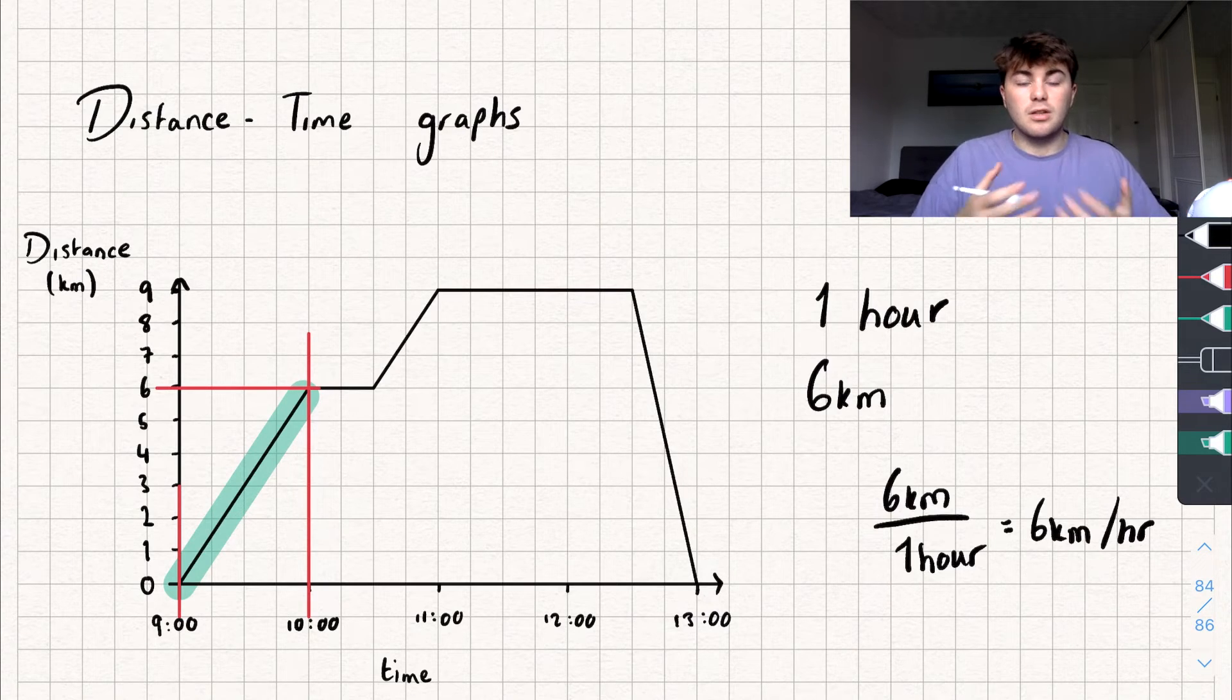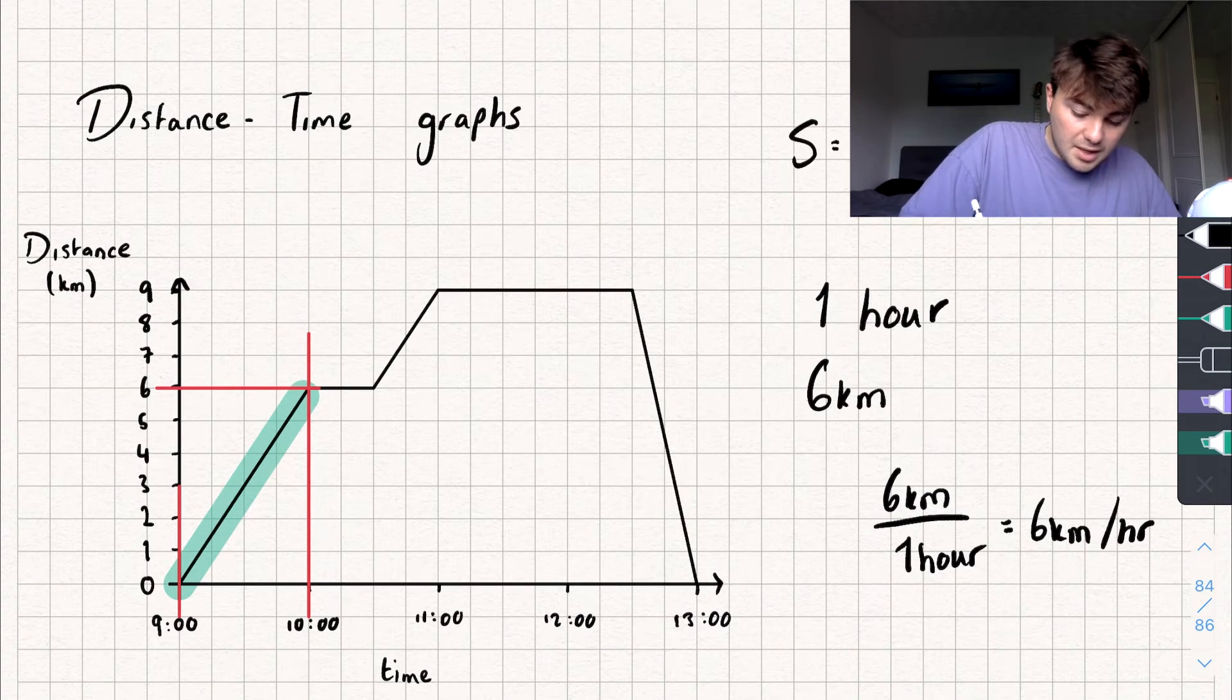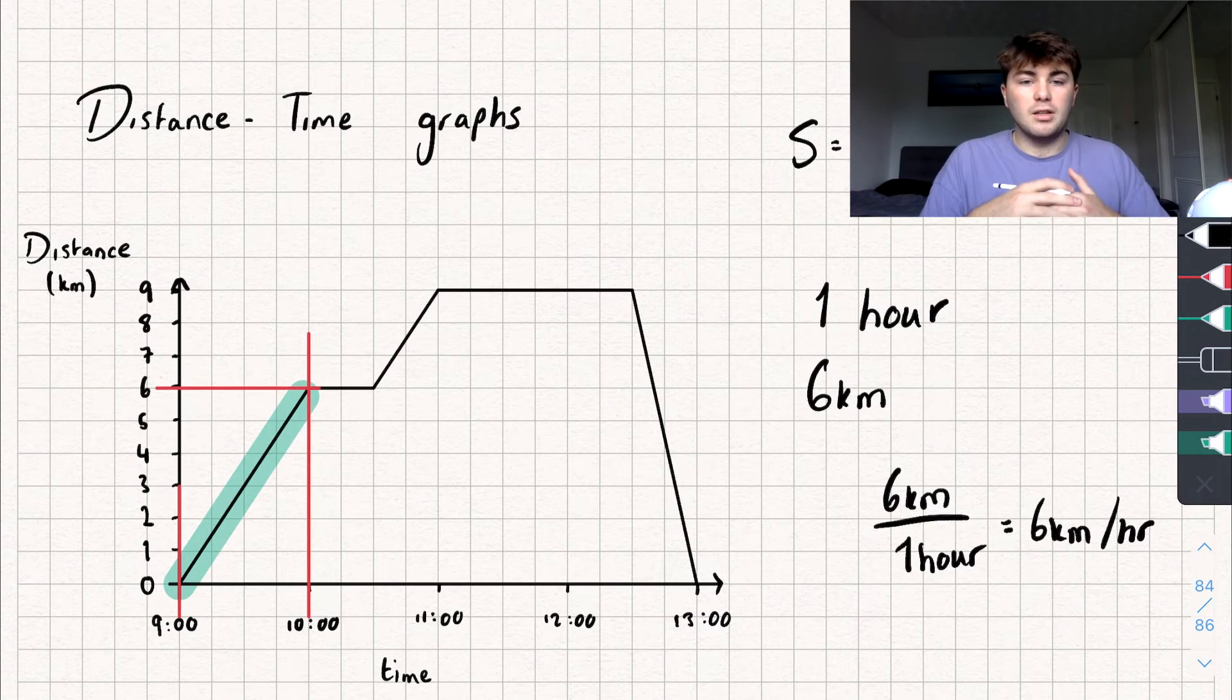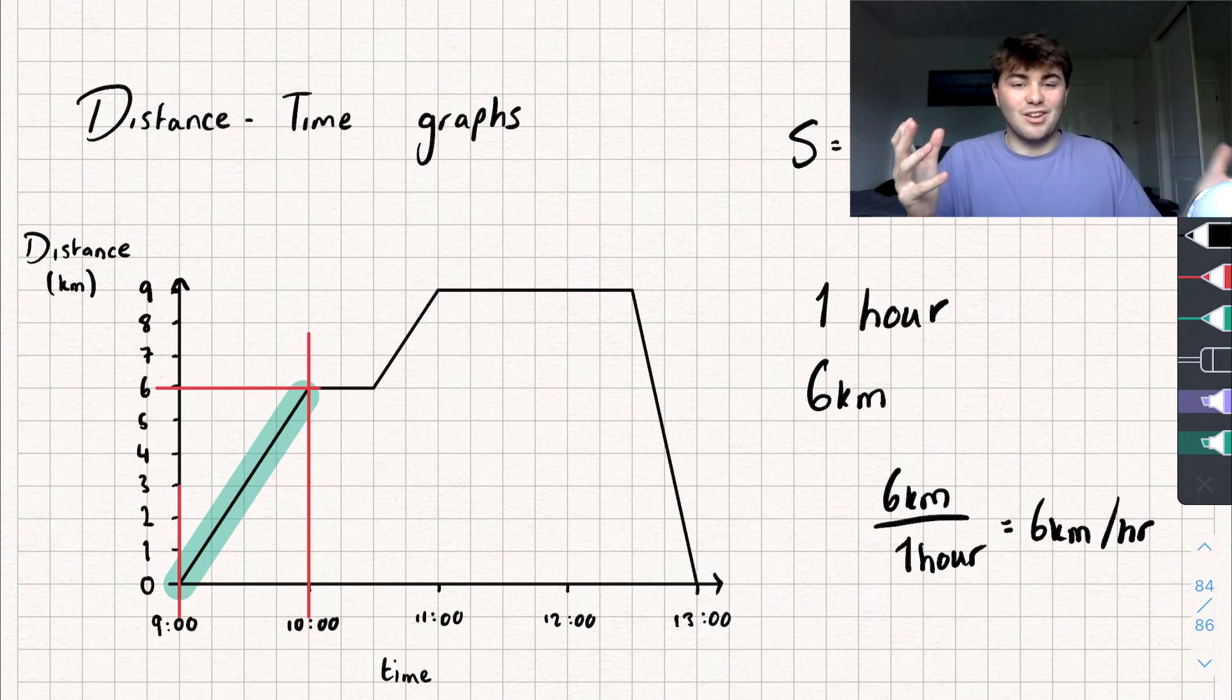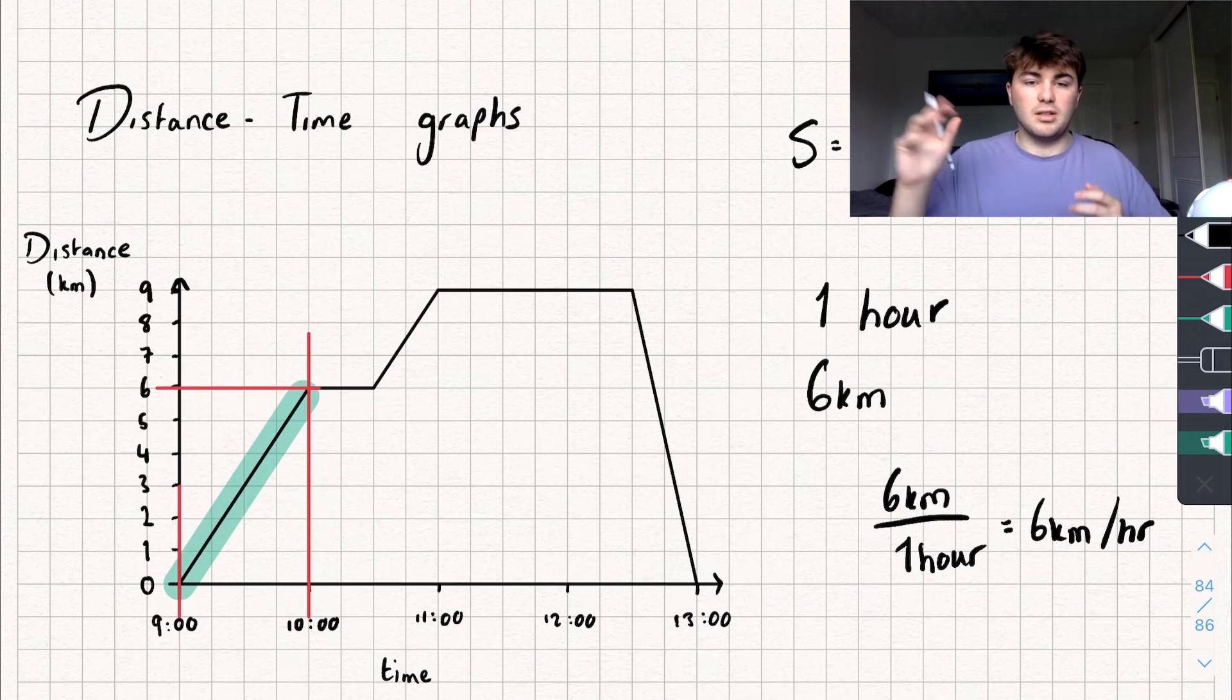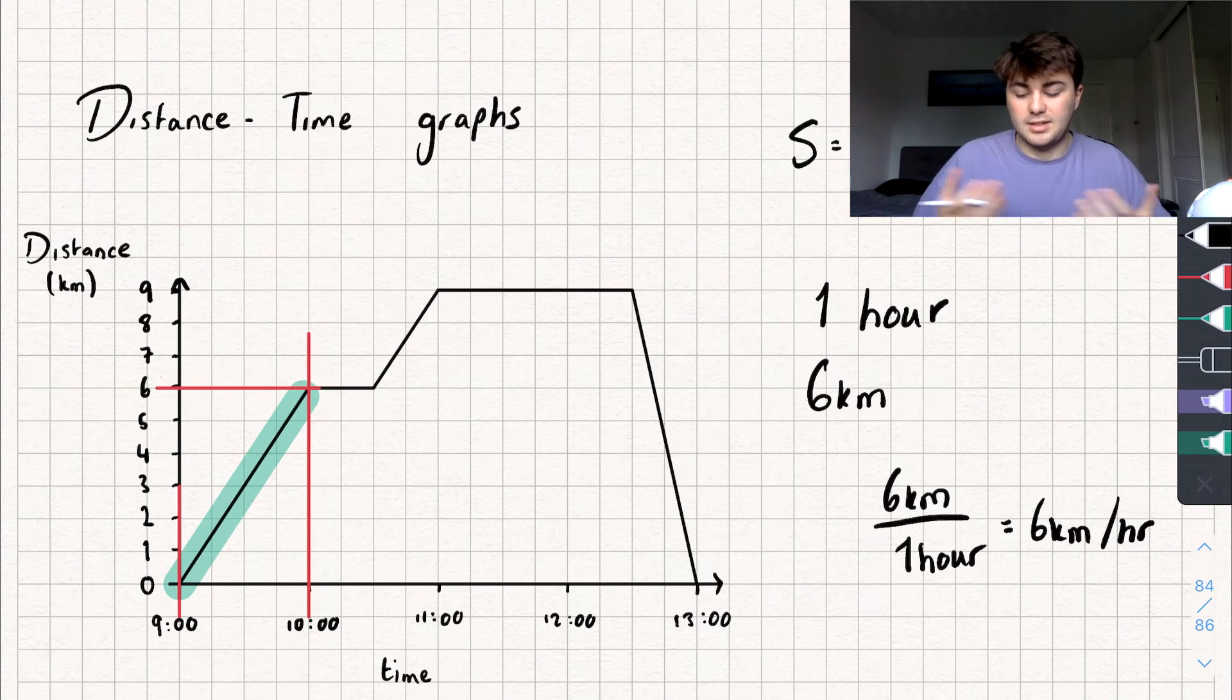This works because speed equals distance divided by time. When we're finding the gradient, we're doing the difference in our y-axis divided by the difference in our x-axis. What we're really doing is distance divided by time, which tells us our speed.